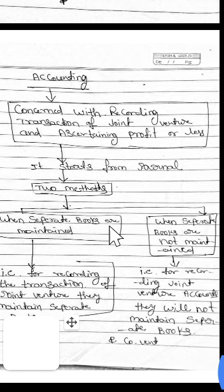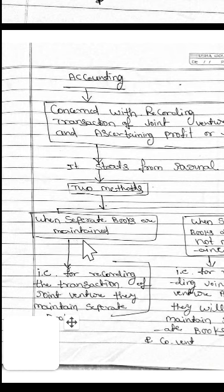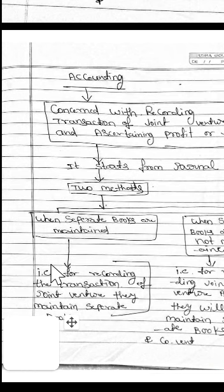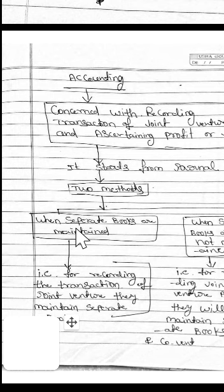For recording transactions in the journal for joint ventures, there are two methods: one when separate books of accounts are maintained, and the other when separate books of accounts are not maintained. Separate books means that A company and B company join together, but they are two individual companies carrying on their own business, and for a particular joint venture they maintain separate books to record those transactions.